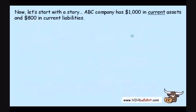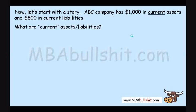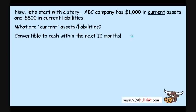So let's start with the story. Let's say that ABC Company has $1,000 in current assets — not $1,000 in total assets, but $1,000 in current assets — and $800 in current liabilities. Current assets and liabilities are assets or liabilities which are convertible or will turn into cash within the next 12 months.